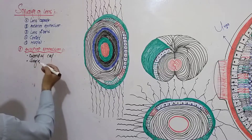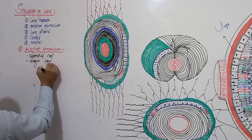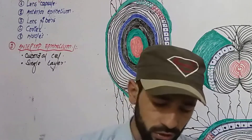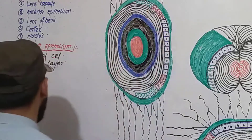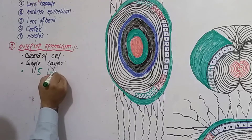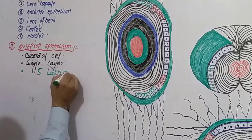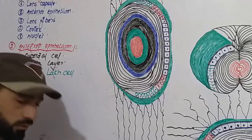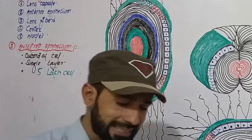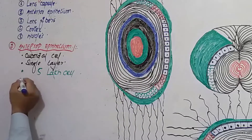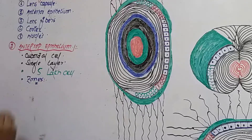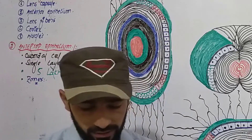There are about five lakh cells present in the anterior epithelium of the lens. The next important point is that it is divided into three zones. The first zone is the anterior zone, also called the central zone.